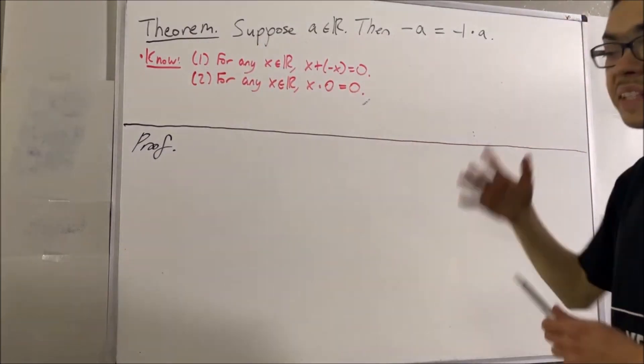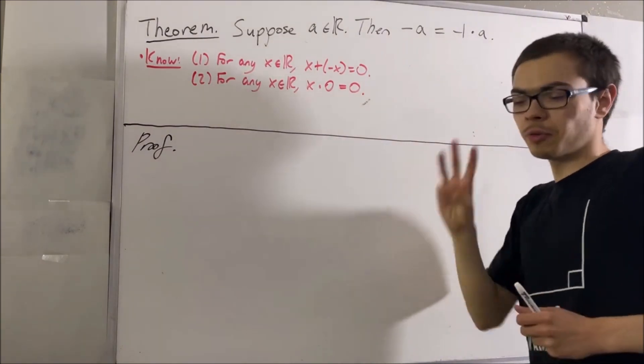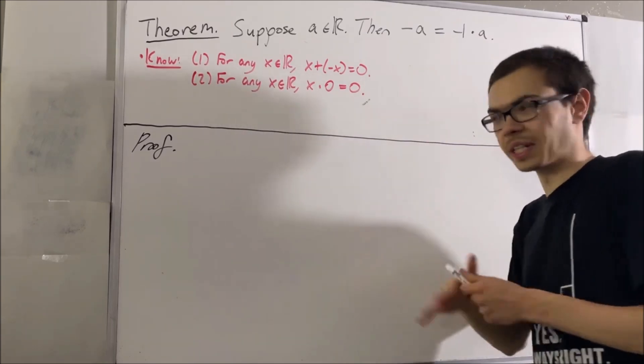The third is the cancellation law of addition. If you recall, for any three real numbers a, b, and c, if a plus b is equal to a plus c, then b is equal to c.